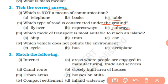Which mode of transport is most suitable to reach an island? If you have to go to an island, you can easily go via waterways using a ship. A train cannot reach there, and by car you also cannot reach an island.